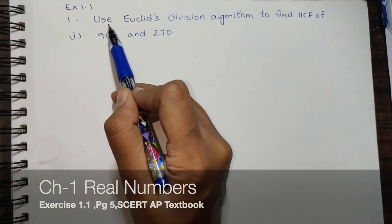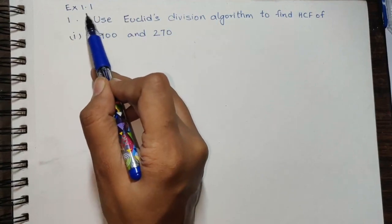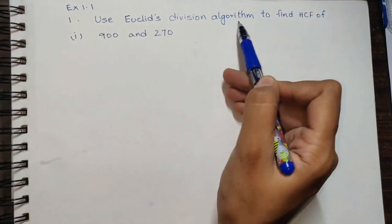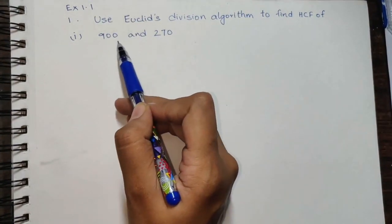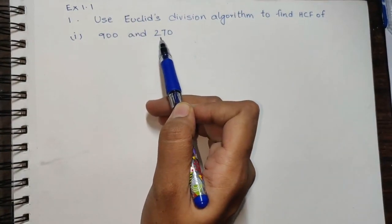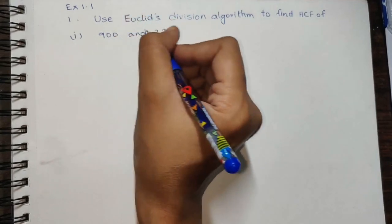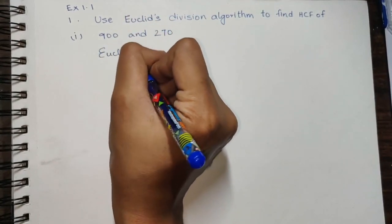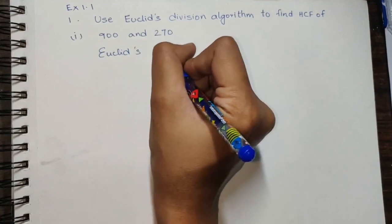Our question here is from Exercise 1.1, first problem. Use Euclid's division algorithm to find HCF of 900 and 270. Quick revision: Euclid's algorithm...